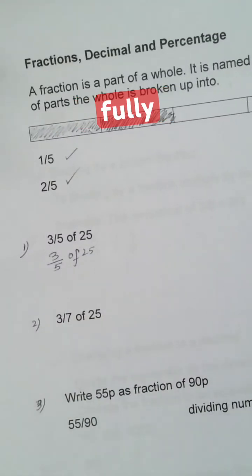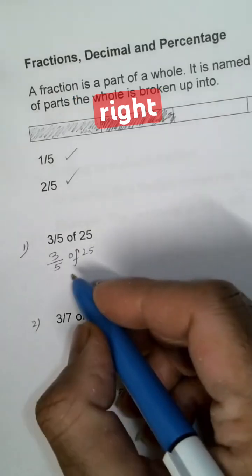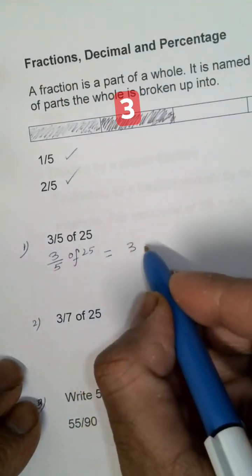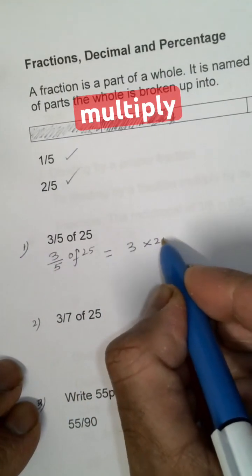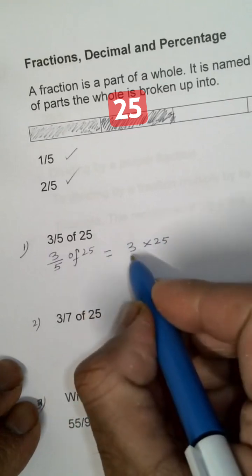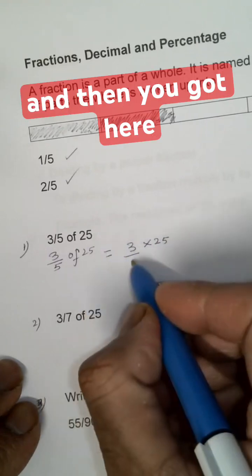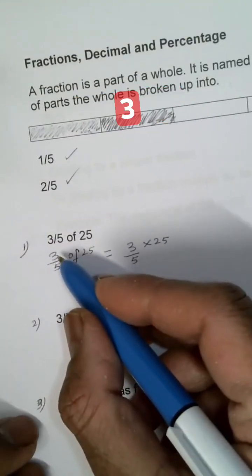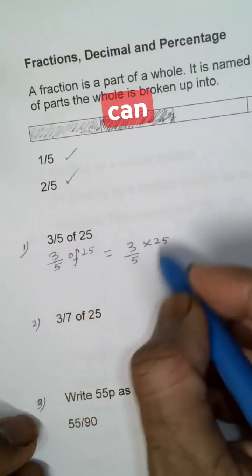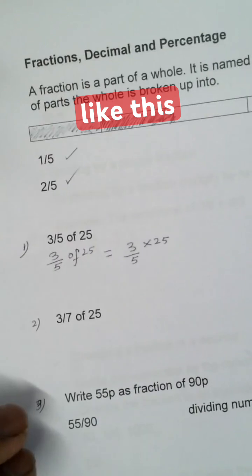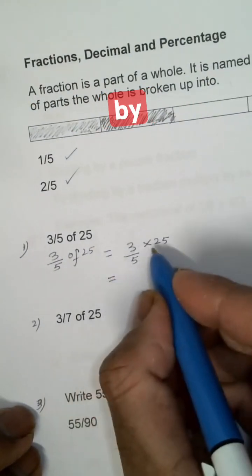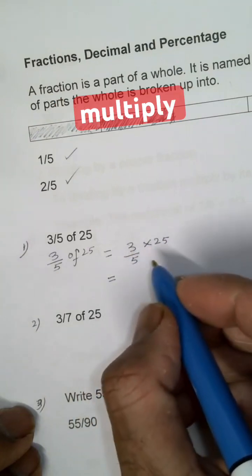Where you can fully simplify. That can be written as 3 multiplied by 25, and then you've got here 3 by 5 already. So the 'of' bit here — like 3 by 5 of 25 — can be written like this. And then you can further simplify this by multiplying these: 3 multiplied by 25.